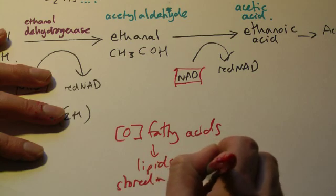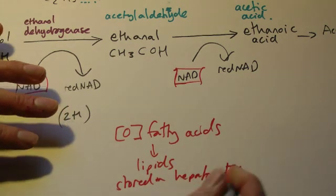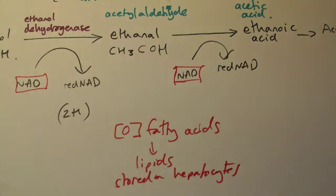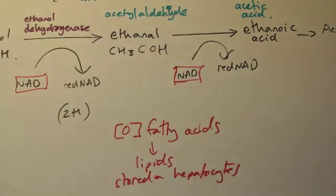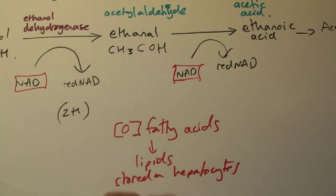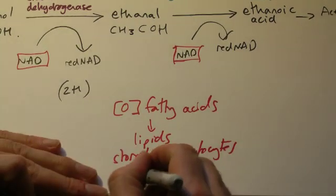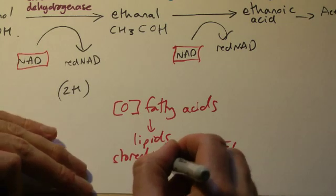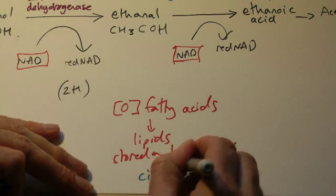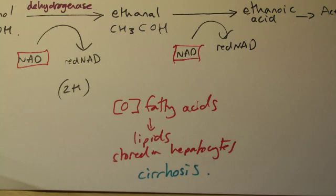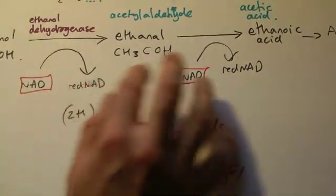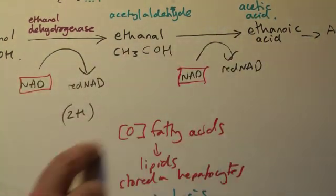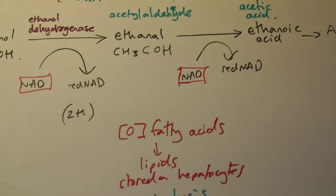As a result, the liver cells are becoming more and more full of lipids, fats, and the liver becomes fatty, which causes all kinds of problems, things like hepatitis and cirrhosis. So too much alcohol in alcoholics, all the NADs being used to detoxify, none left for breaking down the fatty acids, end up being stored as lipids.